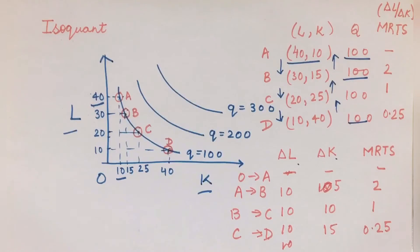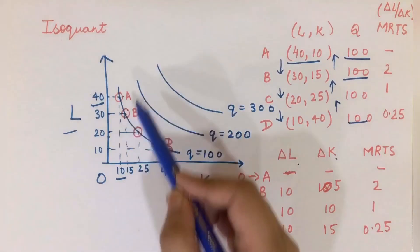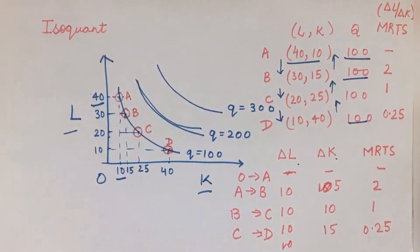Similarly, for Q = 200, there would be some combinations of L and K, and if I join these combinations I get this isoquant. Similarly, for Q = 300, I get one more isoquant which is this one. So this is what an isoquant is all about.